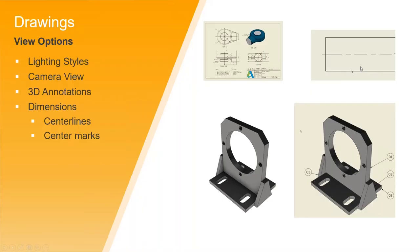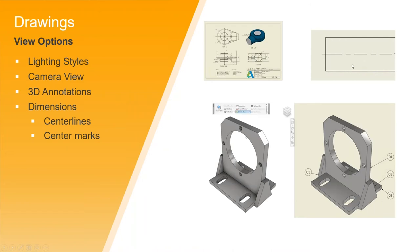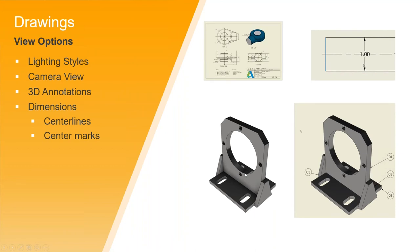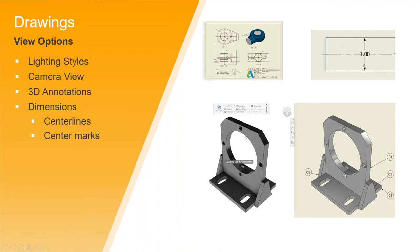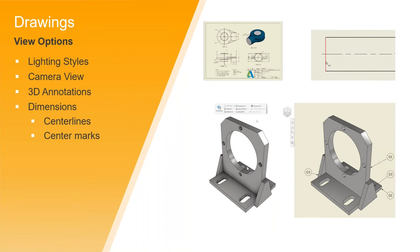In the drawing environment, if you're adding a dimension and going over the top of a centerline, it breaks it so you can easily see that dimension. Below that, in regards to shaded mode, depending on what lighting style you're using within your model, when you go to your drawing, your lighting style and your shaded view is going to update to be represented exactly the same as the way it's shaded in your model environment.